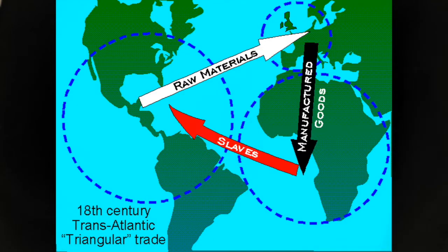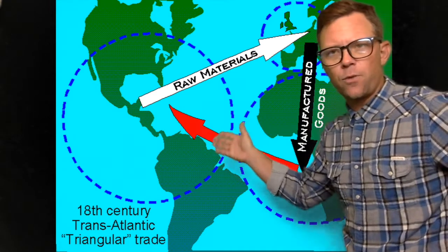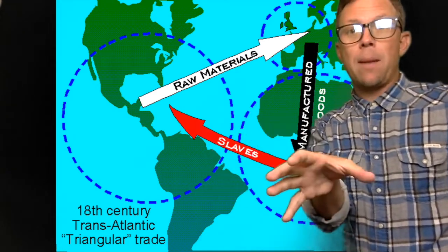What you can see on the screen is the triangular slave trade and what went to which location. This really kicks up in the 17th and 18th century — the 1600s and 1700s. The Europeans in North and Central America were sending raw materials to Europe. From Europe, they were sending manufactured goods — usually made from those same raw materials — to Africa. Those port cities that were formed to make the trip to Southeast Asia shorter became slaver ports. And then the slaves were sent to North America. That is the pattern you need to recognize for this class.